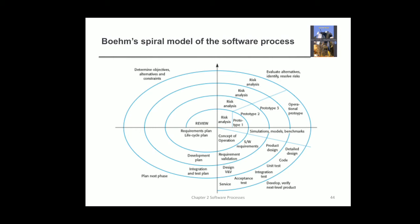Development starts from the inner loop. First there is a review where we collect requirements from users and look at objectives, alternatives, and constraints. Once done, we go to the second quadrant — risk analysis — identifying what risks are involved in building the application and how they can be resolved. After risk analysis, we develop prototype one. Once prototype one is developed, we go for simulations, modeling, and benchmarks. Then the concept of operations is considered. Then we come up with a plan — how to build things — and the comments plan life cycle starts. Once done, we again go to the first quadrant to identify objectives, alternatives, and constraints.